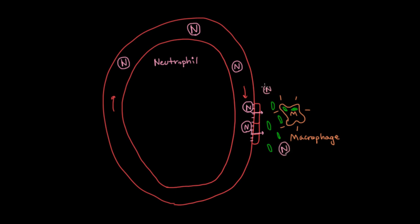The neutrophils are also phagocytes, and so they're going to gobble up a bunch of these bacteria — gobble them up, chew them up, digest them. And once they've done that, they're just going to die, because that is their job: to eat up the bacteria to get rid of it. Their usual lifespan is only five days, and once they die, they become pus.